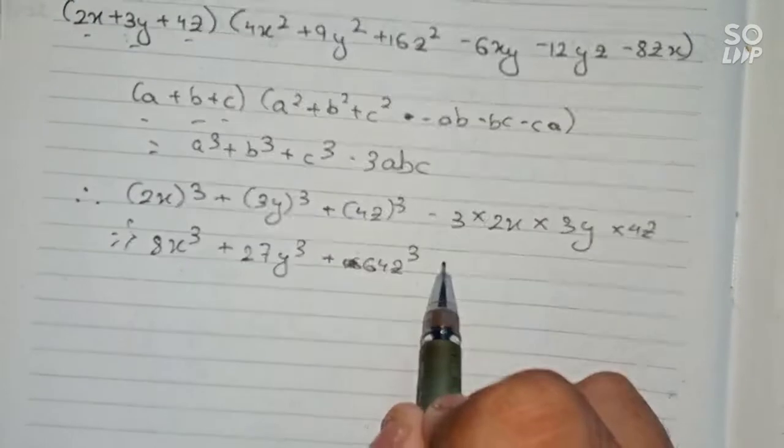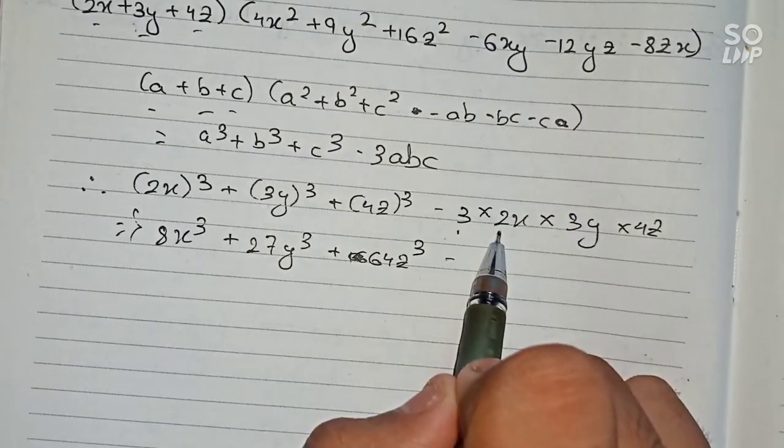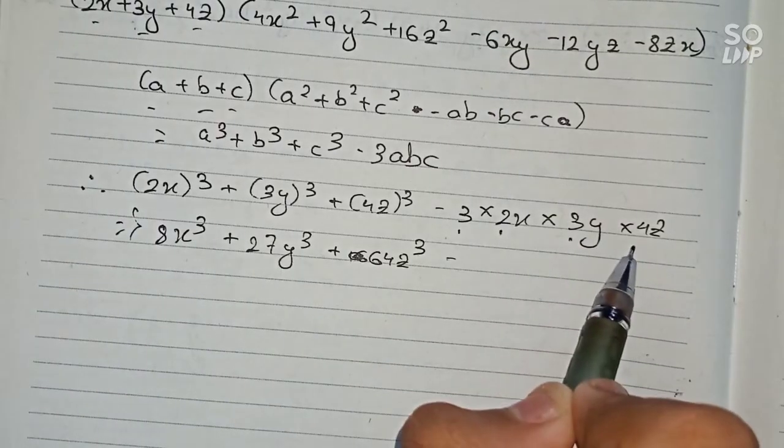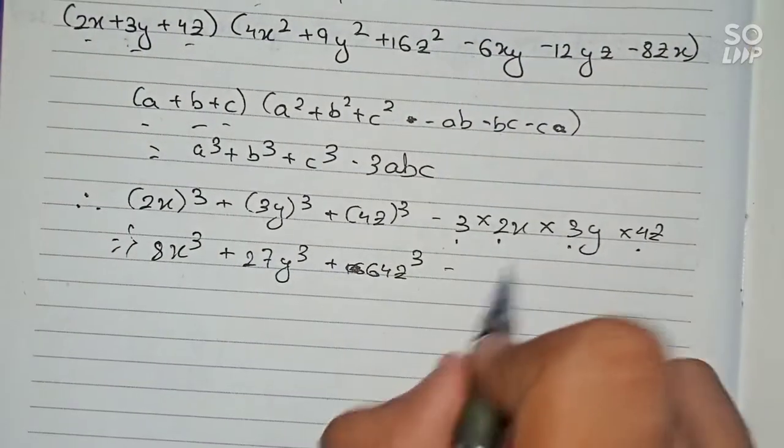Now minus sign: 3×2 is 6, 6×3 is 18, and 18×4 is 72. So that's 72xyz.